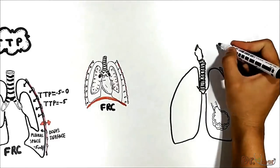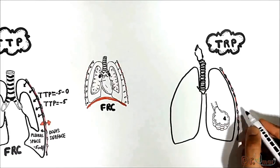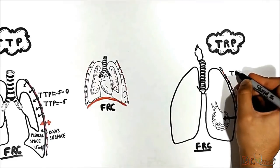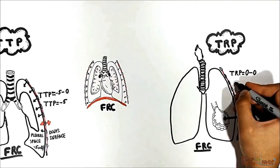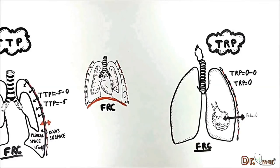To summarize: at FRC, the lung is distended by a positive transpulmonary pressure of +5, while the chest is slightly deflated by a negative transthoracic pressure of −5. Both forces are equal and opposite, so at FRC there is no net distending or collapsing force. The third transmural pressure, trans respiratory pressure, is the pressure difference between alveolar pressure and atmospheric pressure — across the entire chest wall, pleura, and lung. At FRC, trans respiratory pressure equals zero minus zero, which is zero. This is why FRC is considered the neutral or equilibrium state of the respiratory system.